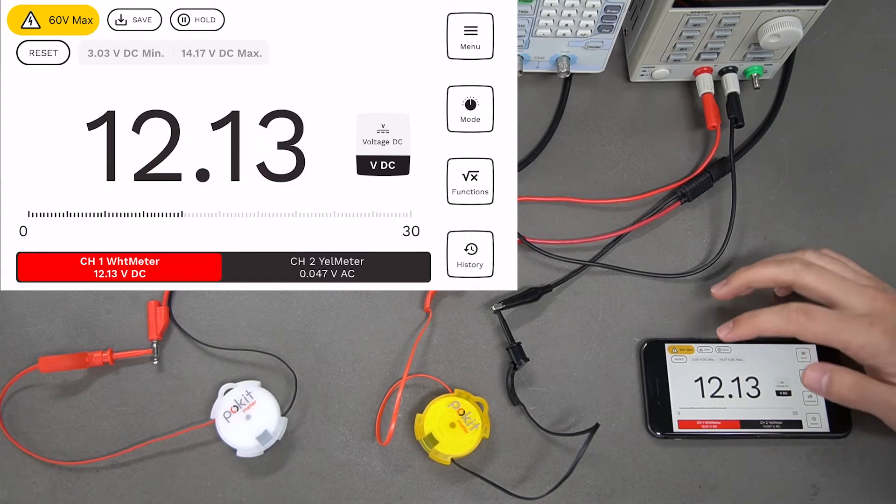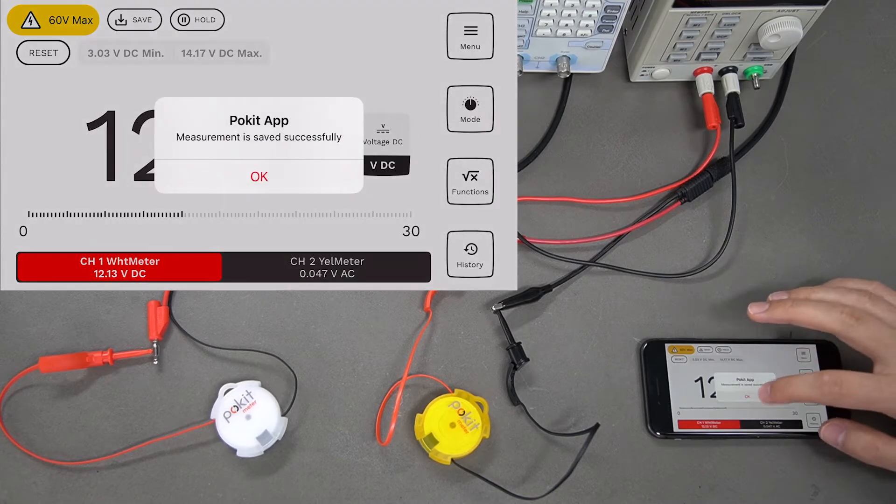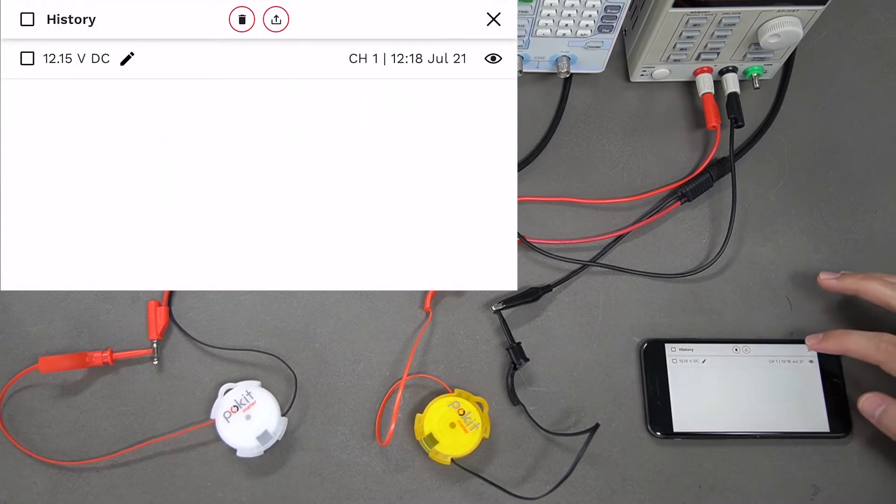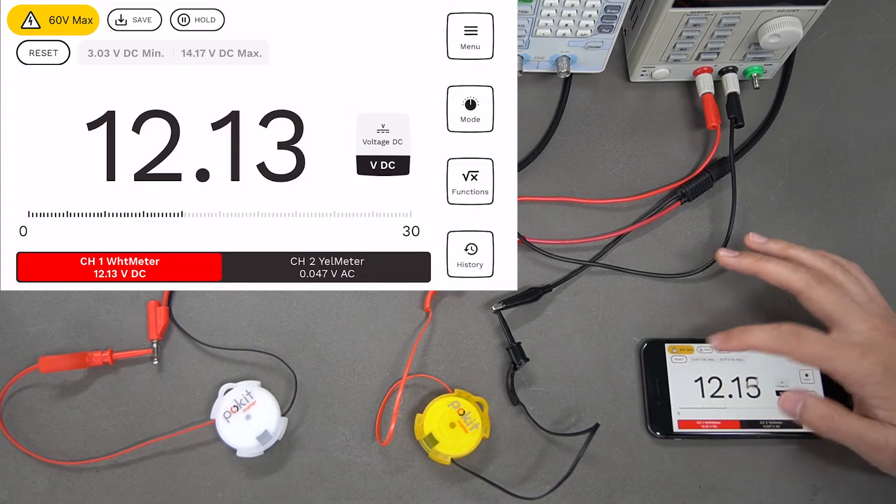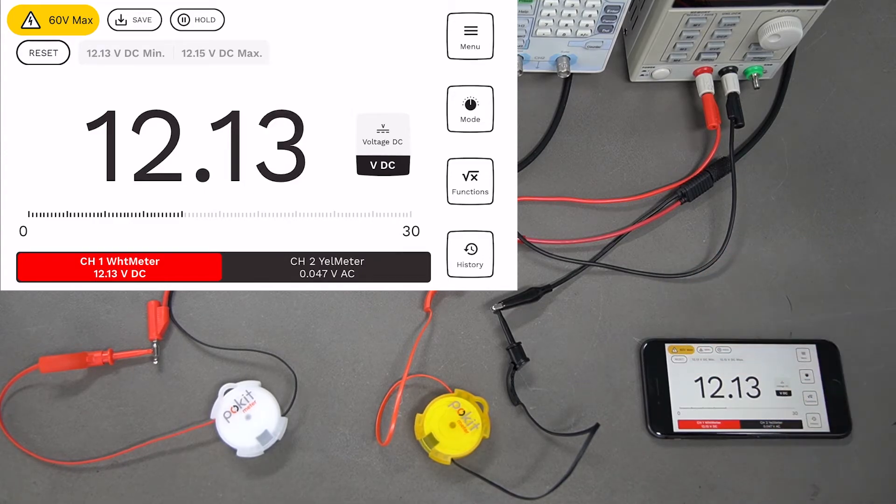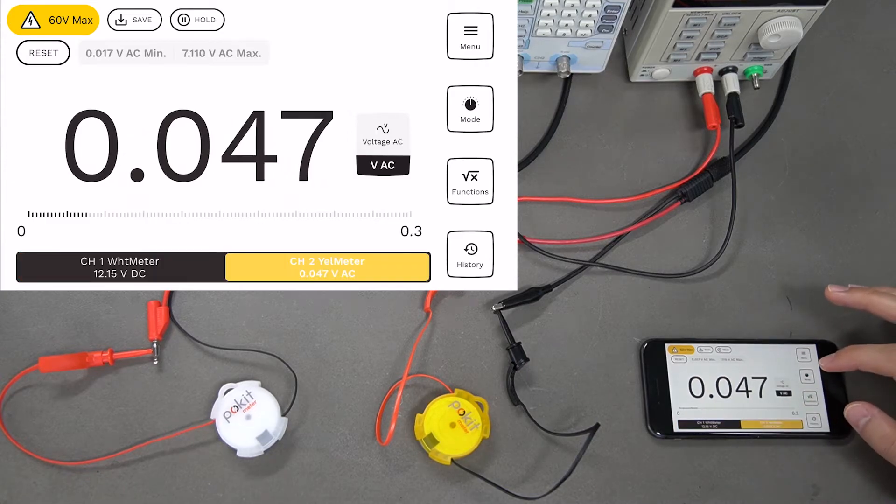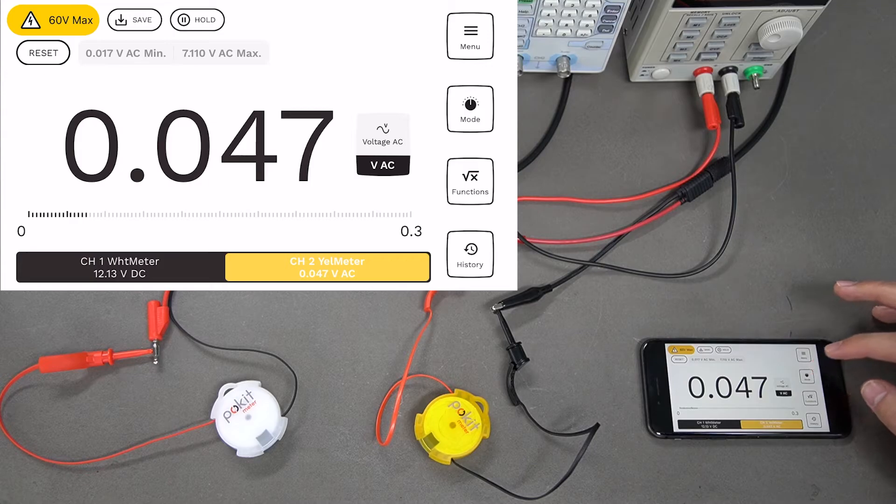If you want to save that, just press the save button at the top here and that'll go down to your history. You can reset the minimum and maximum values as well by pressing the reset button on the left. Now we'll switch over to our yellow pocket meter so we can measure some voltage AC.